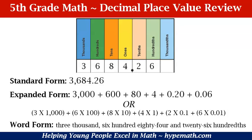Another way that we can write it in expanded form is: 3 times 1,000 plus 6 times 100 plus 8 times 10 plus 4 times 1 plus 2 times a tenth plus 6 times a hundredth. And in word form, we write the words: three thousand six hundred eighty-four and twenty-six hundredths.